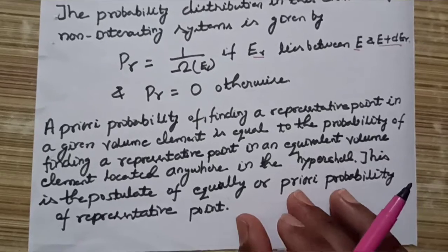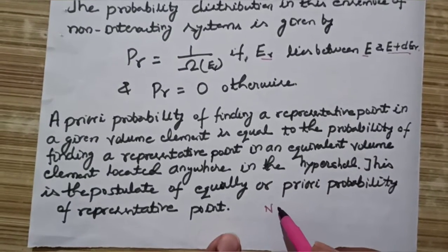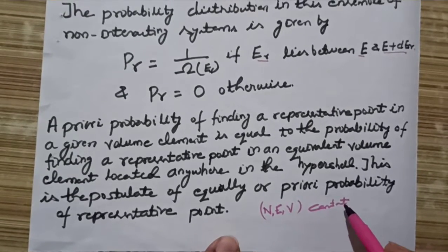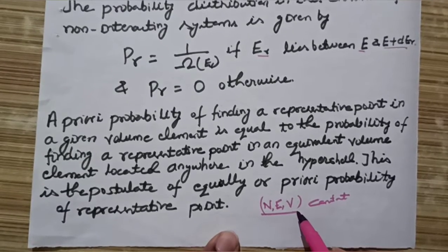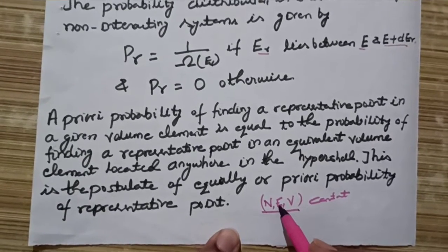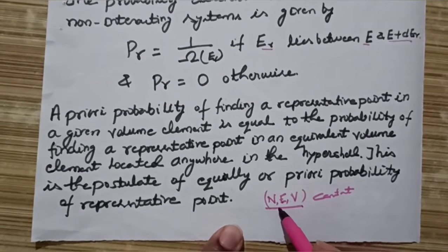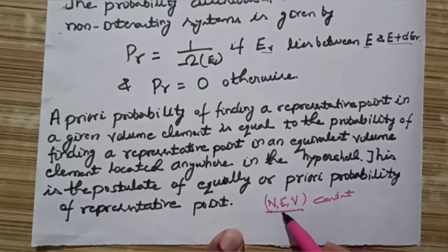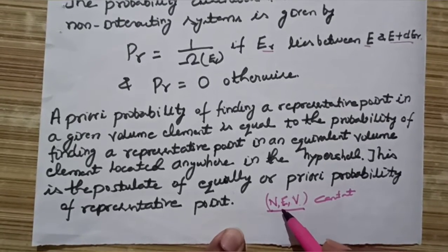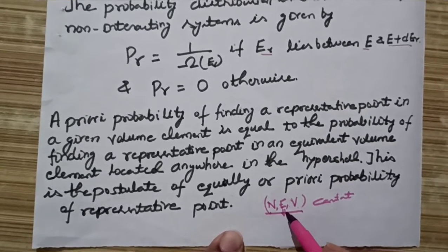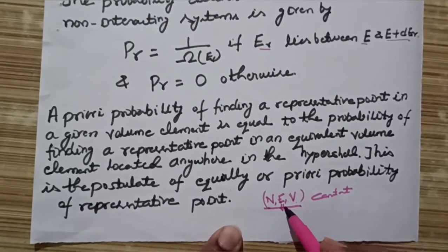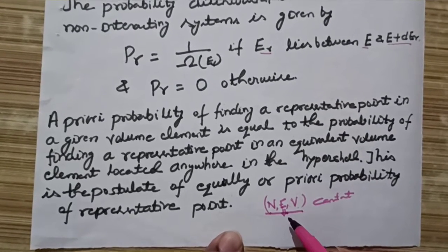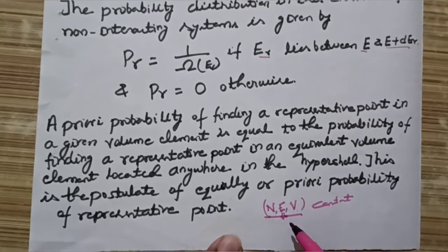To summarize, in the micro canonical ensemble the values of N, E, and V are constant. The walls are impenetrable, rigid, and non-conducting: non-conducting walls prevent energy exchange keeping E constant, rigid walls keep V constant, and impenetrable walls keep N constant. In the next lecture we shall discuss the canonical ensemble.